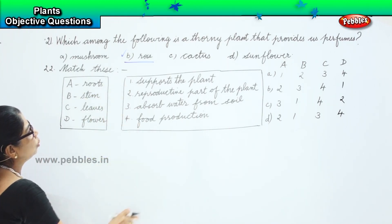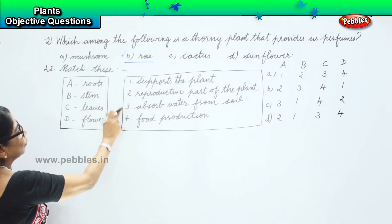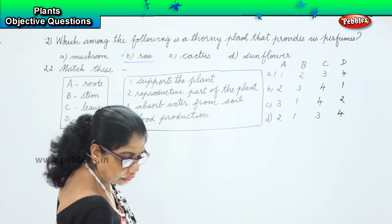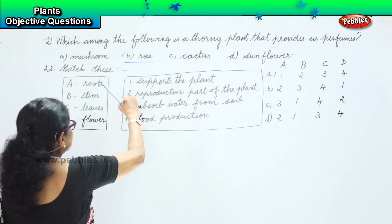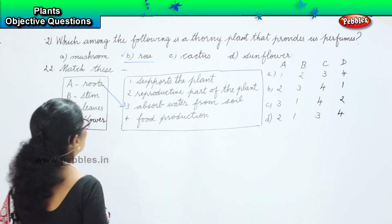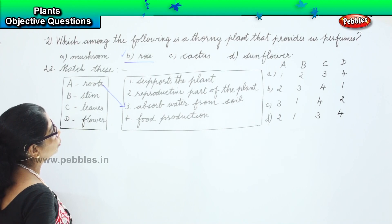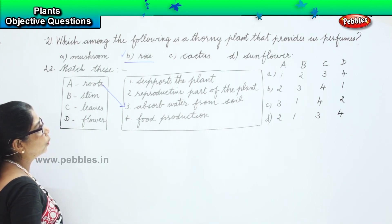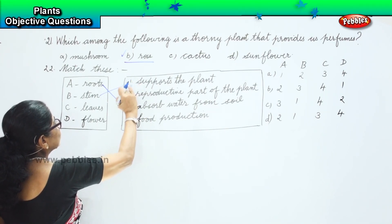Now, roots. What does the roots do? Roots absorb water from soil. So A, 3. Roots absorb water from the soil. Stem, what does the stem do? Stem supports the plant. The stem supports the plant.